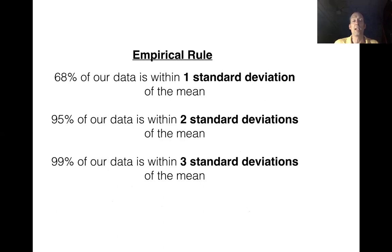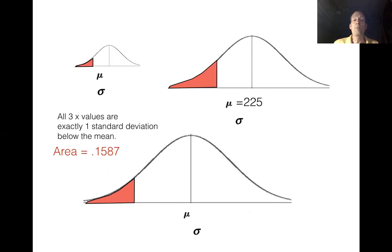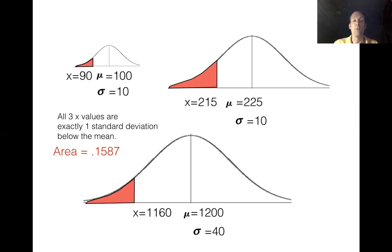Think of the empirical rule: 68%, 95%, and 99% of data are within one, two, and three standard deviations of the mean respectively. It doesn't mention specific averages or standard deviations because they don't really matter — the only thing we have to know is how many standard deviations we are above or below the mean. Graphically, if we look at three curves with totally different averages, standard deviations, and x values, but each x is one standard deviation below the mean, all three show exactly 15.87% area.